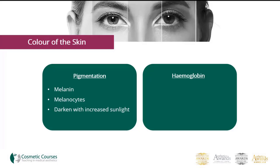As well as the amount of melanin in the skin, the amount of blood in the dermis as well as the amount of oxygen in the blood will also affect the skin colour. Those with a high level of oxygen in the blood will have a pink colour to the skin, but those who have less blood flow to the skin or have a lower oxygen level may take on a slightly grey or blue appearance.